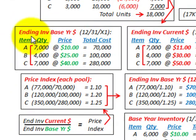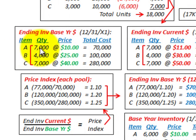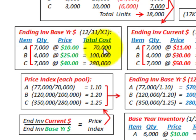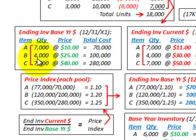Next, we look at our ending inventory at base year dollars at 12/31/X1. We take these quantities of ending inventory and multiply each item by the price from the beginning inventory — the beginning of year price. That gives us the cost for the ending inventory in base year dollars for each of items A, B, and C.